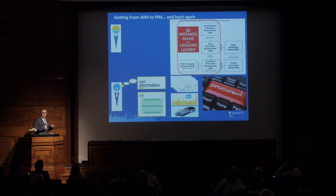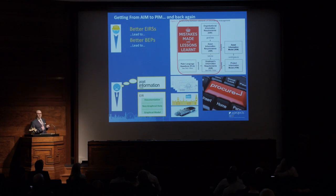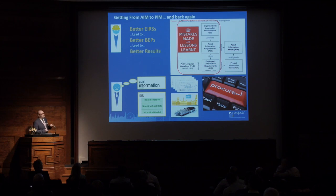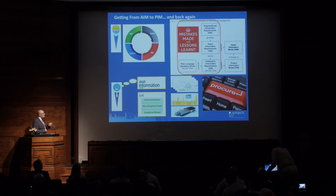There are some mistakes and lessons learned — this is a process of going through it a few times to get it right. We feed into the OIRs — the organisational information requirements — the asset information requirements, and the plain language questions we didn't think to ask the first time. That means a better EIR to take to the contractor, and the contractor replies with a better BEP. Ask a better question, get a better answer. It's a continuous improvement cycle — plan, do, check, act, and repeat. We're getting better at the way we do this.